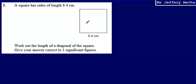This is question 3 from a series of videos taking a look at the Edexcel practice papers. Here we're told a square has sides of length 8.4 centimeters, and we're asked to work out the length of a diagonal of the square. Give your answer correct to three significant figures.